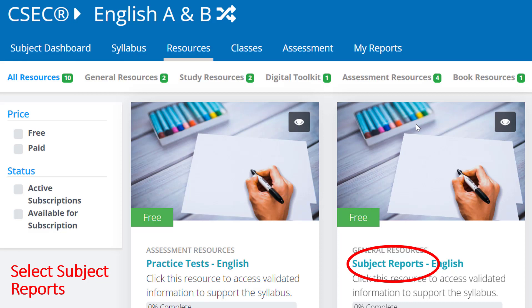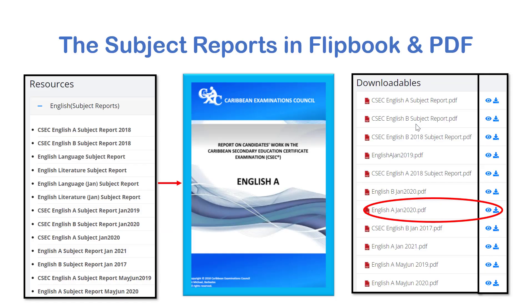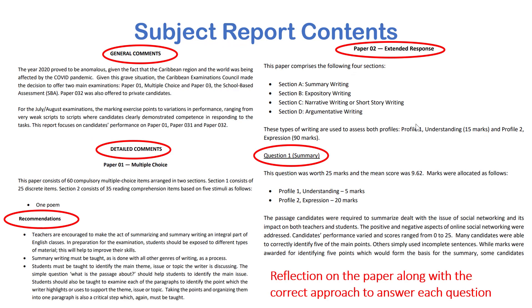Here, on the English A and B Resources page, if you click on Subject Reports, you will see a listing of subject reports which are available both as flipbooks and PDF documents. Looking inside a subject report, you will find very important notes about the overall performance of students on each question for the named exam in the selected year. There are general comments, detailed comments, and a deep look at how each question should have been answered.